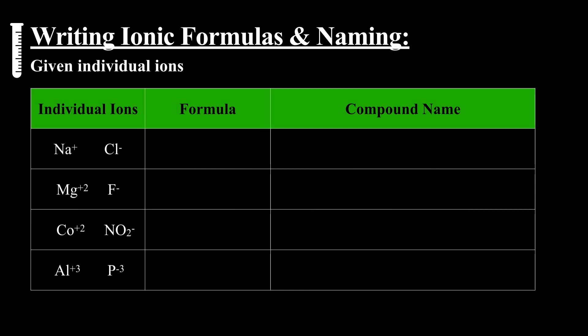What if we are given the ions, we need to make the formula and name it? Na plus, Cl minus, we've done this. NaCl would be the formula. The compound name would be sodium chloride, the -ide ending for the anion.